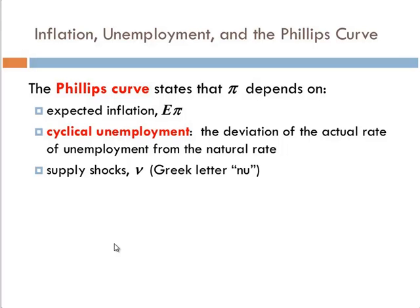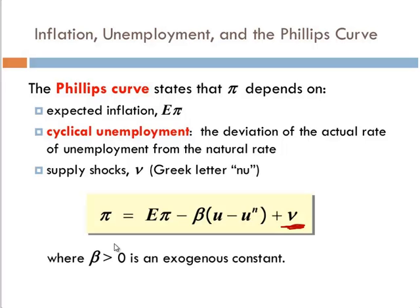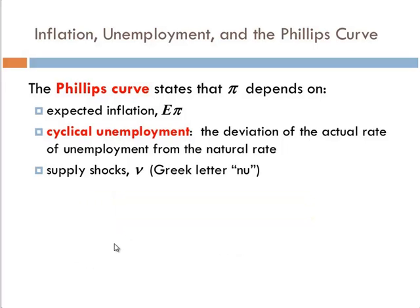We'll probably leave the long-run trade-off for a later class, but this is what we'll do for now. The Phillips Curve essentially postulates that inflation depends upon expected inflation, unemployment, or by this, the book calls this cyclical unemployment.